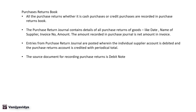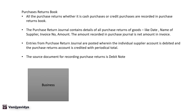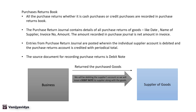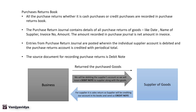Let us understand the process of purchase returns. The business returns the purchased goods to the supplier and debits the supplier's account, issuing a debit note to the supplier along with the goods. For the supplier it is a sales return, so the supplier will credit our account in their books and send us a credit note. So we send a debit note with the goods to the supplier, and the supplier sends us the credit note.